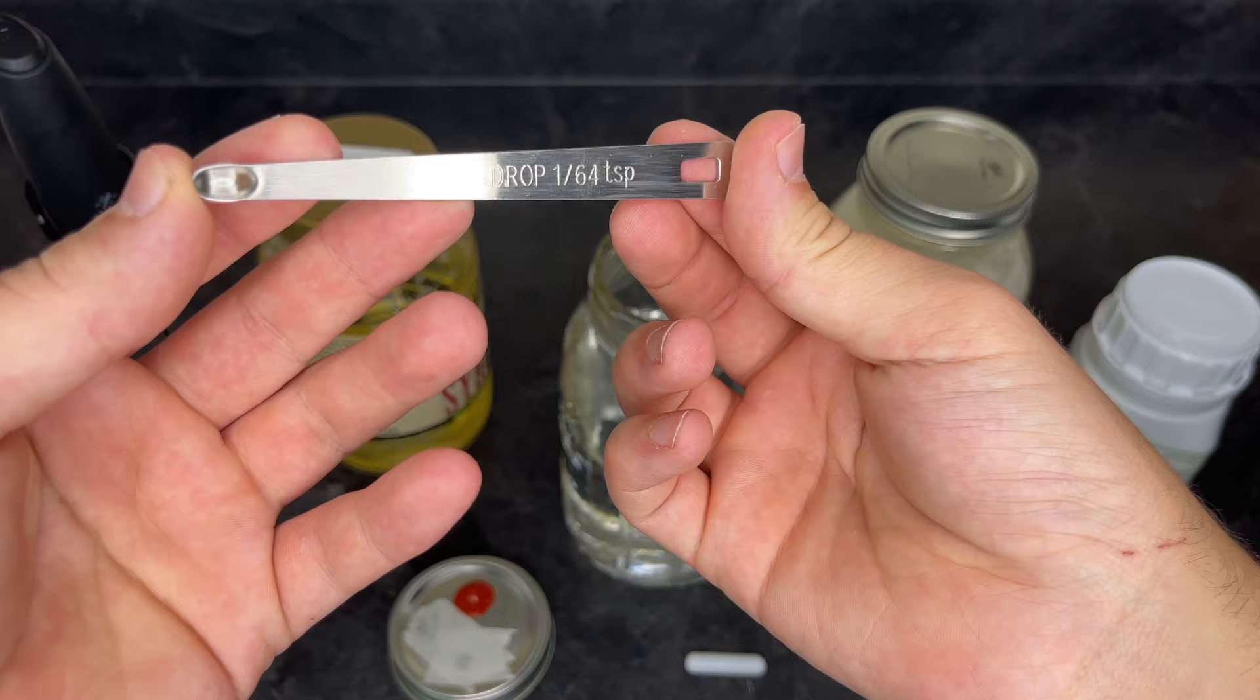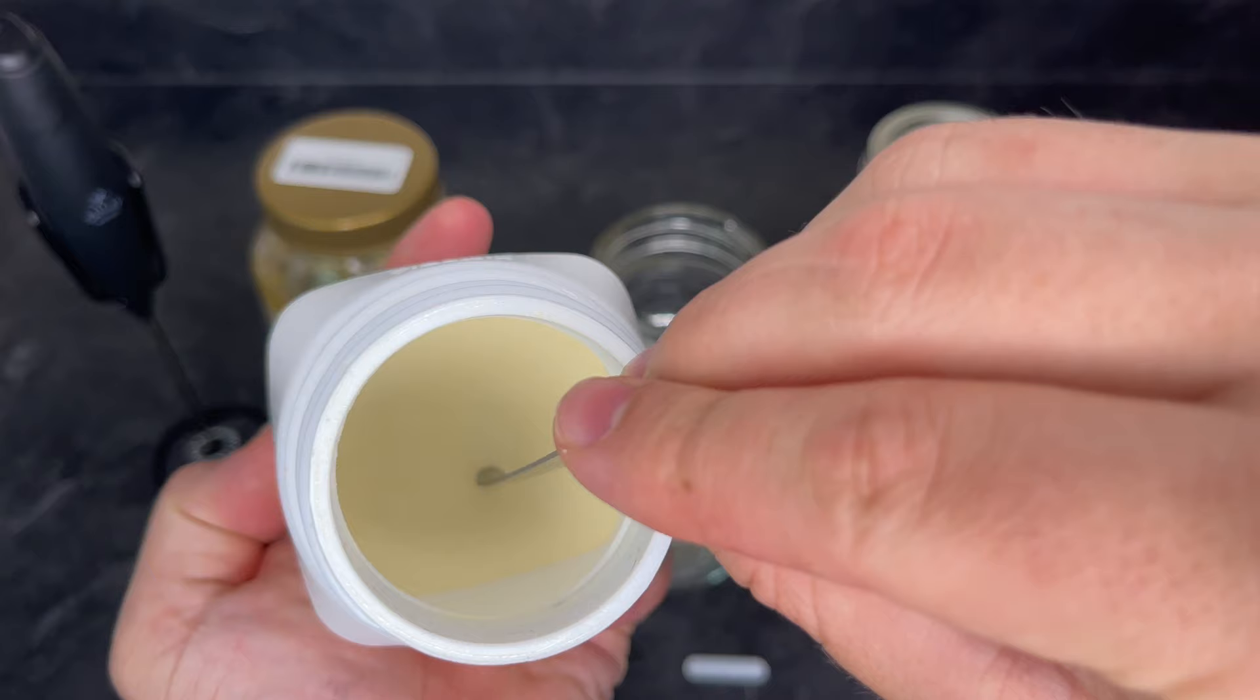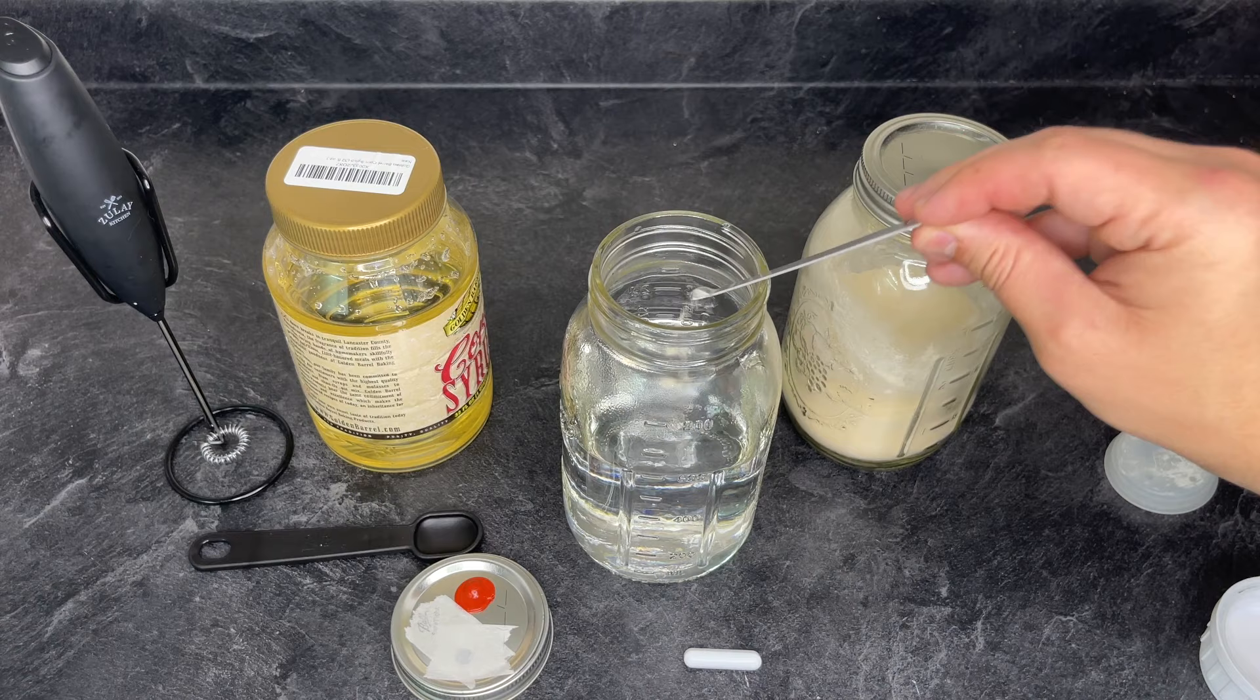I only use 1/4 teaspoon for each ingredient because if I used more, the solution would become cloudy and the mycelium does not grow as fast. You're welcome to try experimenting with adding more, but it just doesn't seem to dissolve well enough without an expensive hot plate.